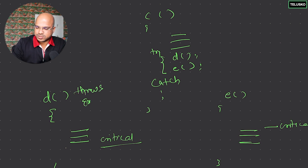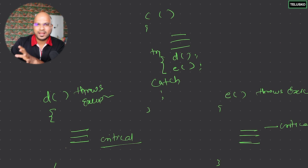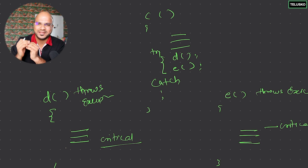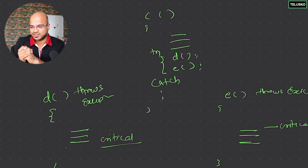To fix this, you write `throws Exception` in the signature of `d` and `e`. By doing this, you are saying that whatever problem arises in `d` and `e`, they will not handle it — they will send the exception to whoever is calling them. This is sometimes called "ducking" the exception. Method `d` or `e` says it's not my responsibility; the method calling me — which is `c` — will handle it.